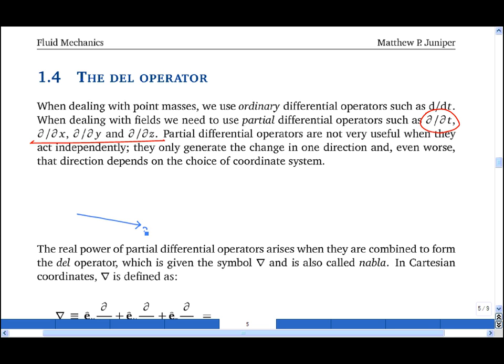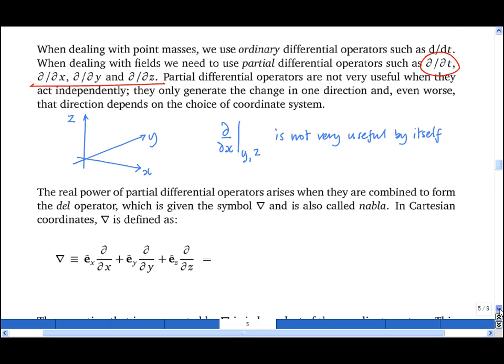If I draw a coordinate system x, y, z, then d by dx gives me the variation in the x direction, keeping y and z constant. And this value gives the variation only in one direction, and worst of all, that direction depends on our man-made choice of the coordinate system. In other words, not only is it a property of the field, it's also a property of the way we have chosen to represent the field in space. So it's not very useful by itself.